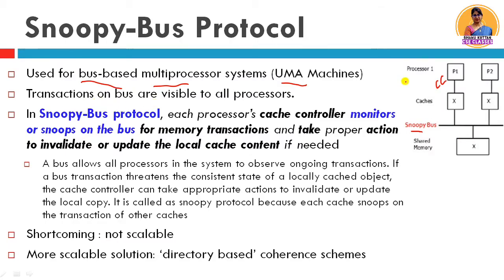Transactions on the bus are visible to all processes since the bus is a global structure — all buses are connected and whatever transactions are happening, everything is visible. Each processor's cache controller monitors or snoops on the bus for memory transactions and takes proper action to invalidate or update the local cache content if needed.